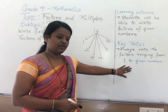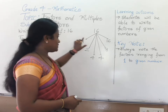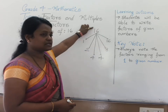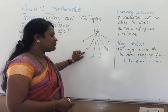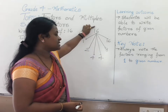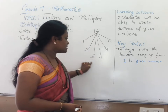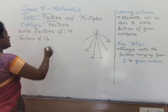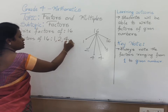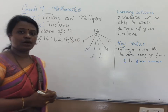Always note that factors range from 1 to the given number. We have noted in a range: 1 16s are 16, 2 8s are 16, 4 4s are 16. These numbers which we receive, they are factors. So let us note down 1, 2, 4 and 16 are the factors of the given number.